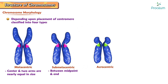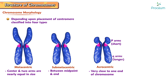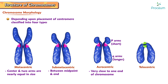Acrocentric chromosomes have a centromere very close to one end, so their p arms are very short and q arms are relatively much longer. Telocentric chromosomes have the centromere at one end and have only one arm.